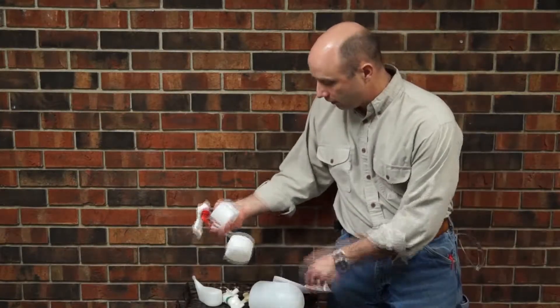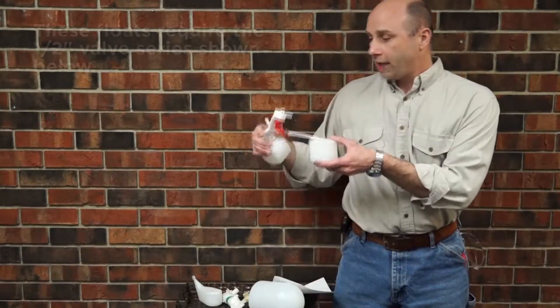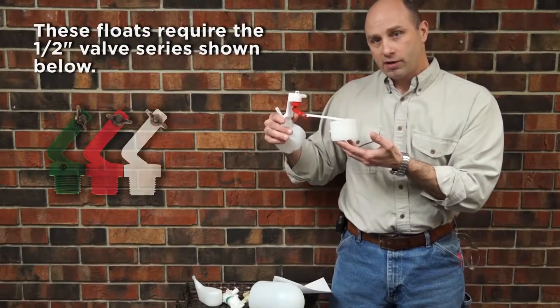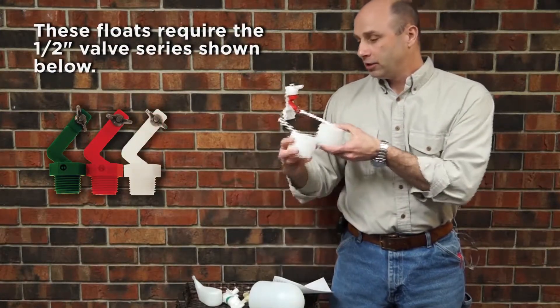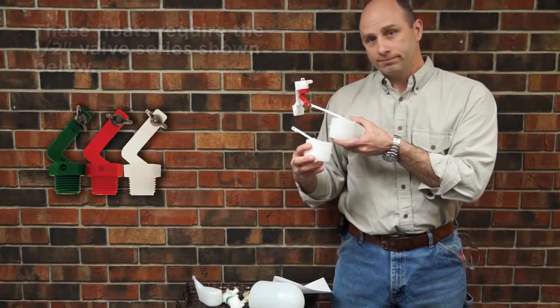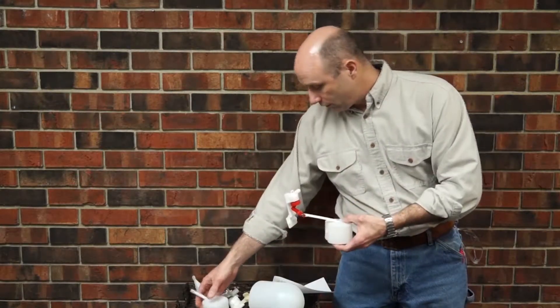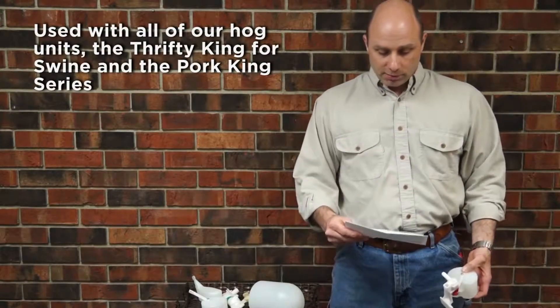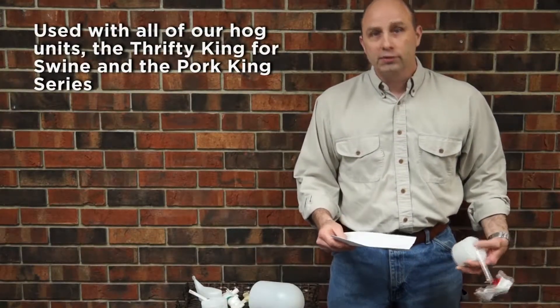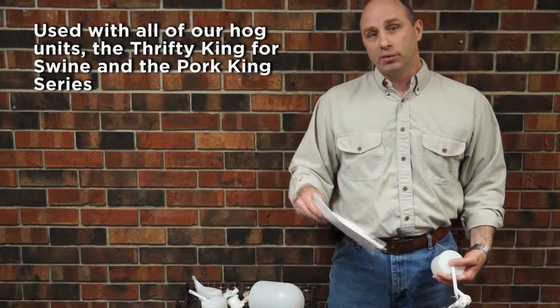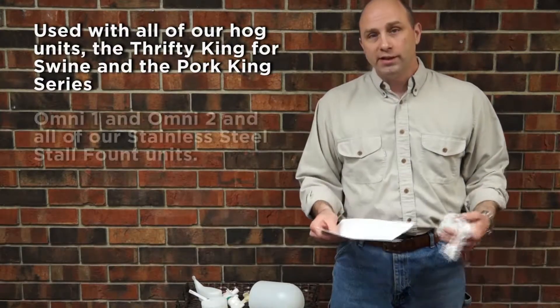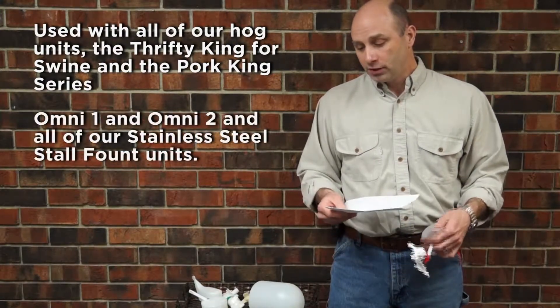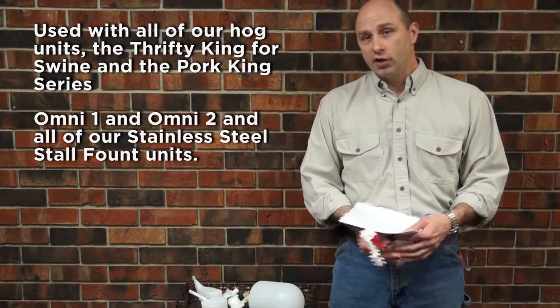Here I'm going to show the half-inch valve with the long arm and then here is the short arm. So the short arm is going to be used with all of our hog units, both the Thrifty King hog and the Pork King. It's going to be used in the Omni 1 and Omni 2 and all of our stainless steel stall fount units.